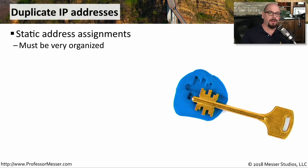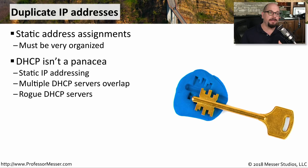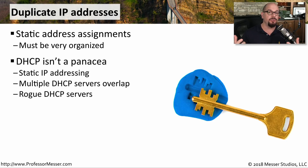Some network administrators prefer to manually configure IP addresses on all their devices without a DHCP server, so you have to be careful not to duplicate IP addresses between devices. DHCP doesn't guarantee no duplicate IP addresses either — you may find a combination of static IP addresses overlapping with DHCP pools, multiple DHCP servers with accidentally duplicated addresses, or someone may turn on their own DHCP server without your knowledge, and a rogue DHCP server starts handing out IP addresses.